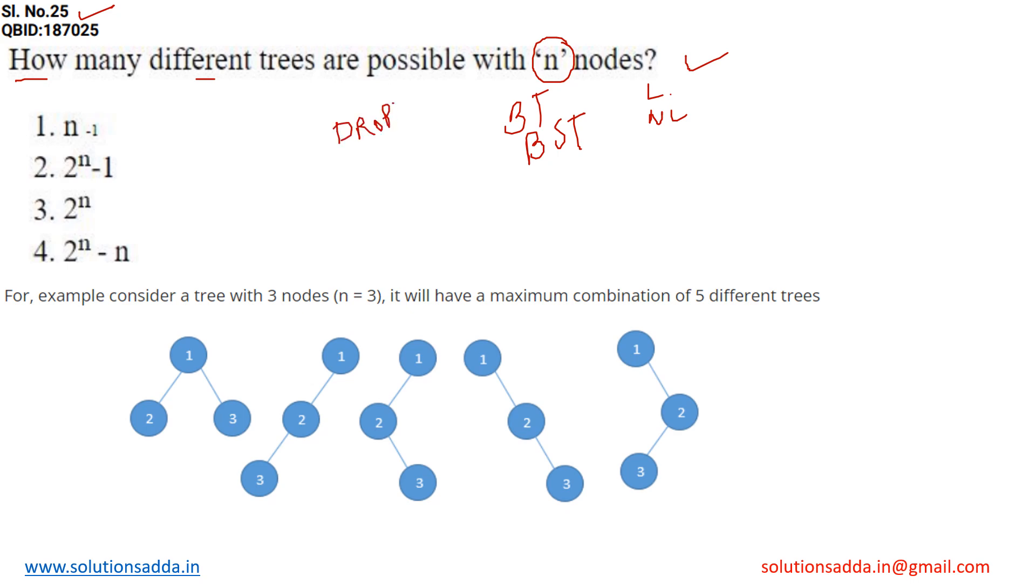Let's understand the similar concept in data structure. Where we have n number of nodes, let's suppose that value of n equals to 3, it will have a maximum combination of 5 different trees.